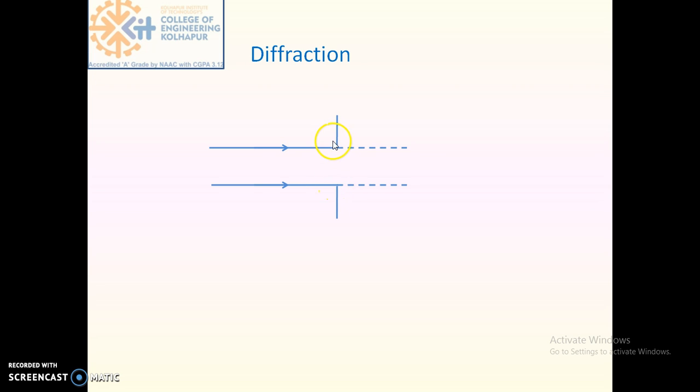This slit has edges, and the diffraction of light takes place at the edges of this obstacle as shown here. As the parallel rays are incident, we get parallel diffracted rays. The dotted line shows the direction of incidence.